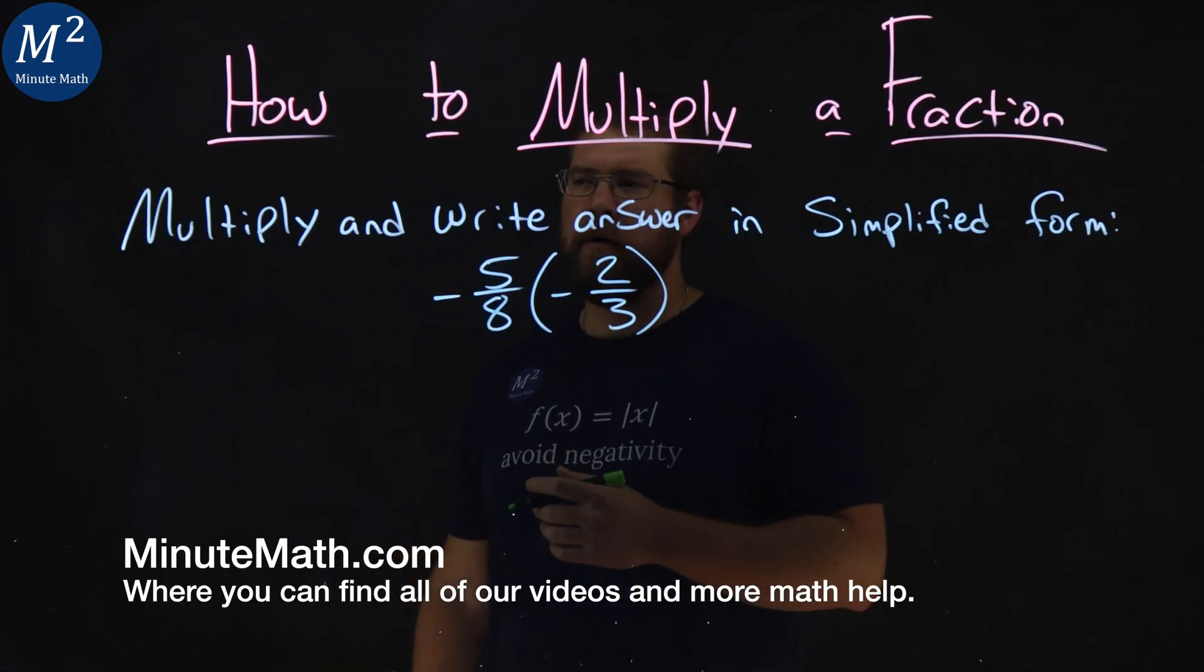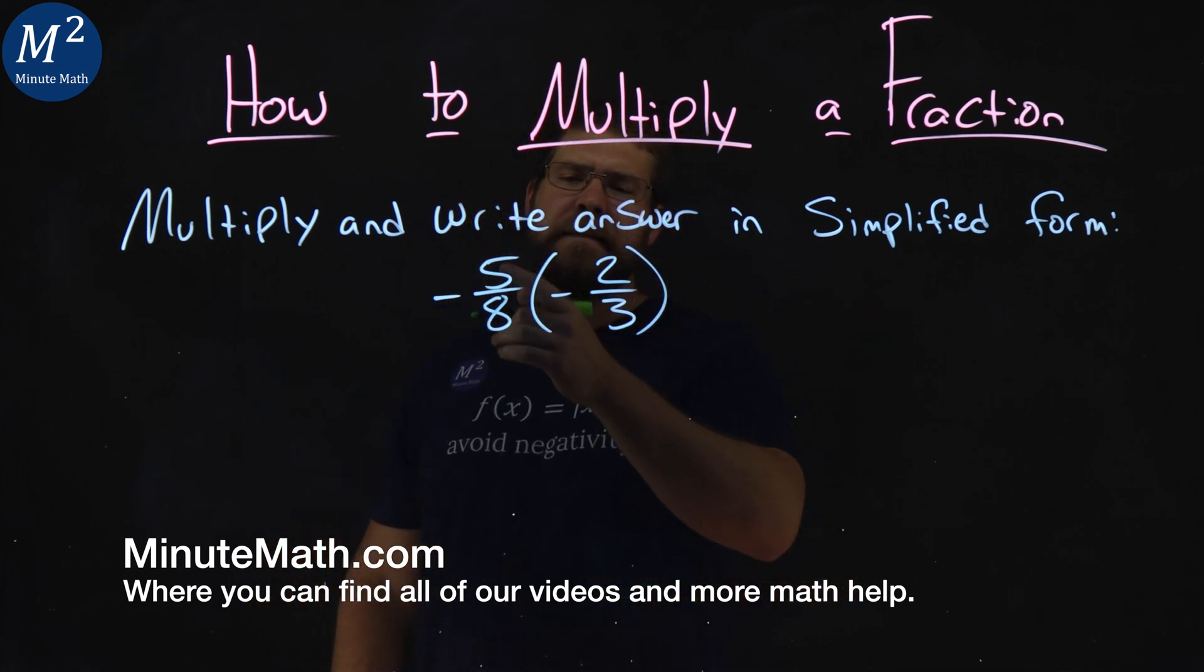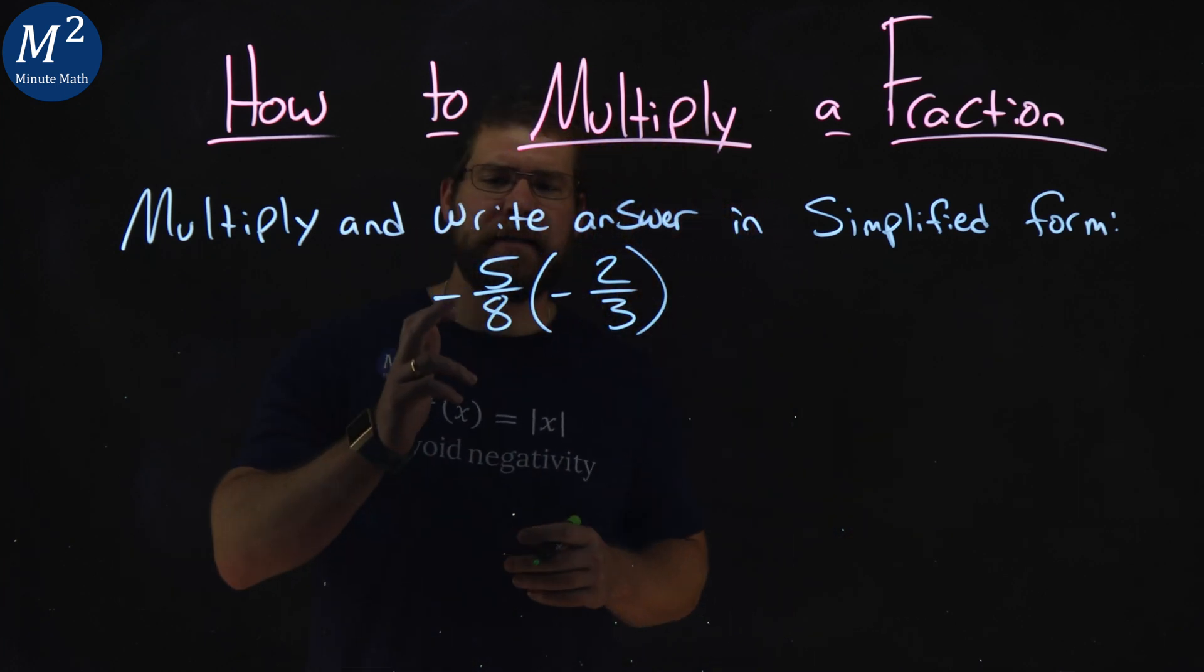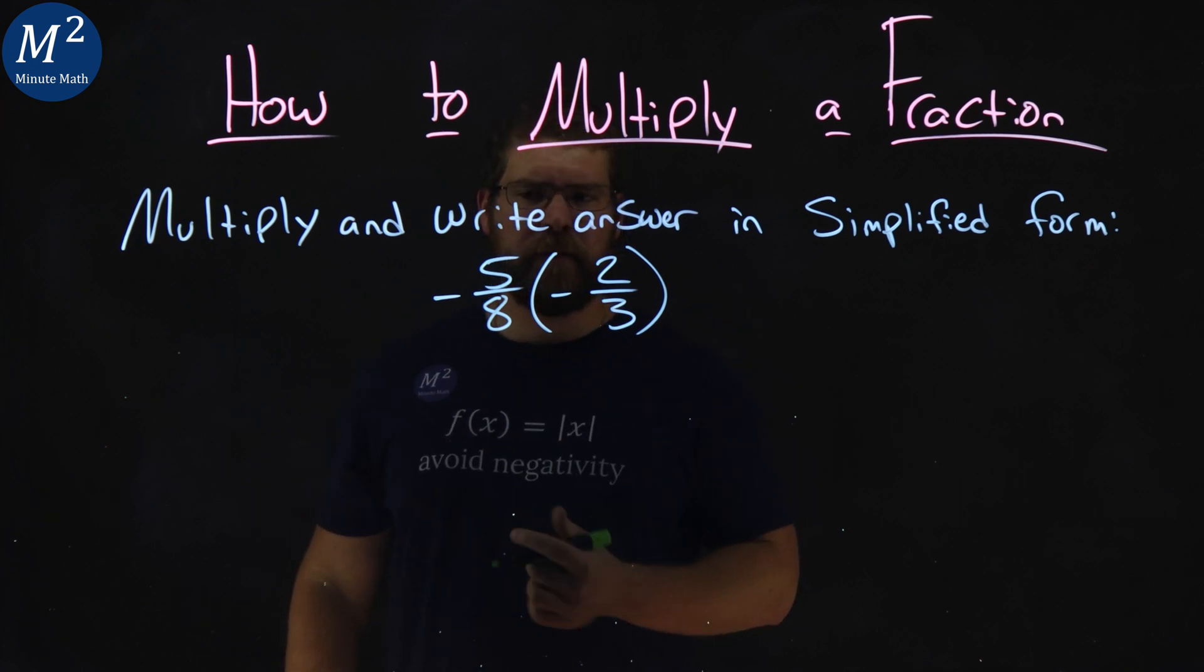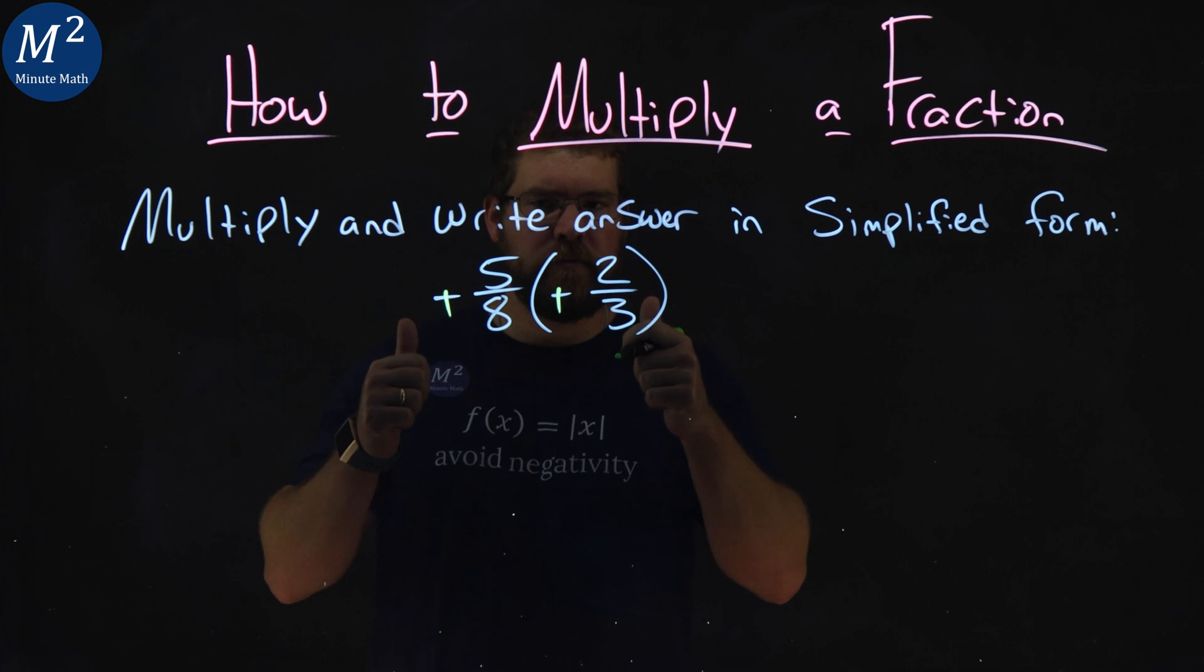We're given this problem here: multiply and write the answer in simplified form, negative 5/8 times negative 2/3. Well, right off the bat, I see a negative times a negative, so we know our answer is positive. We can just cross that right there. It's going to be positive, good to go.